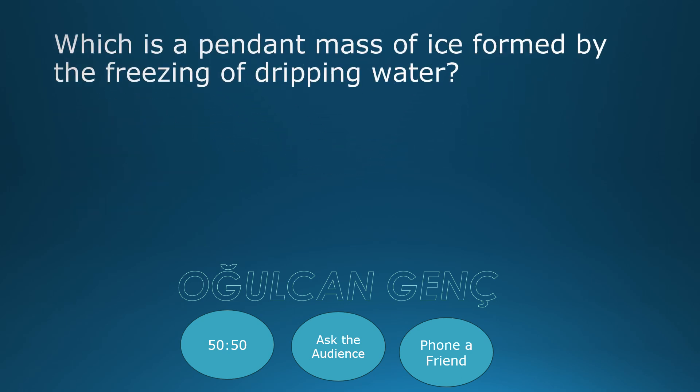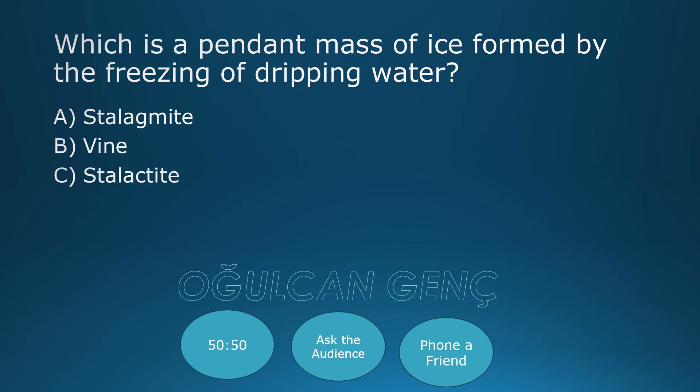Which is a pendant mass of ice formed by the freezing of dripping water? Options: Stalagmite, Vine, Stalactite, Icicle. Final answer: Icicle, option D. Correct answer is Icicle.